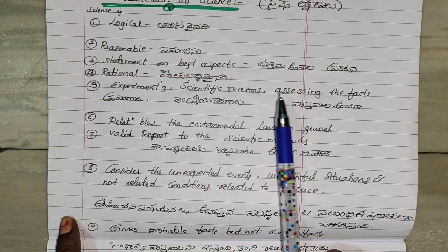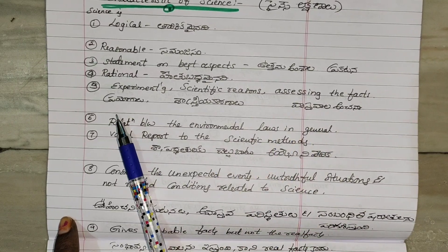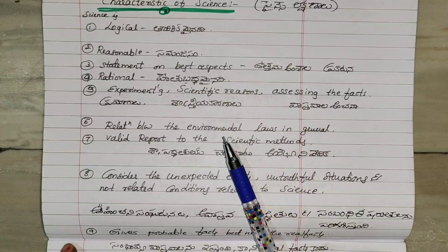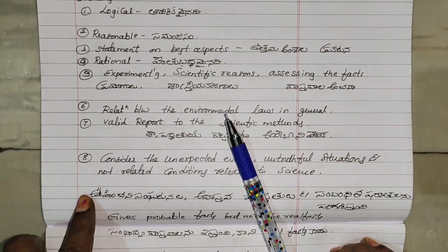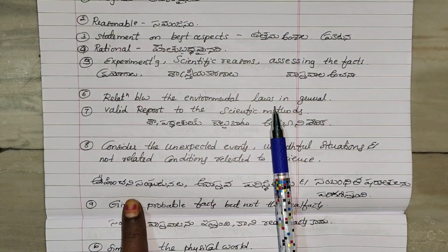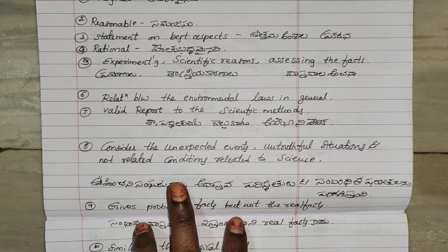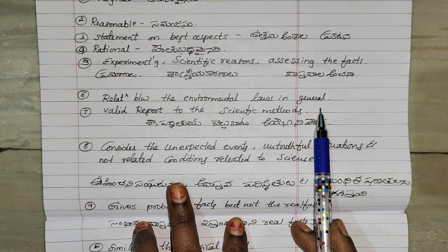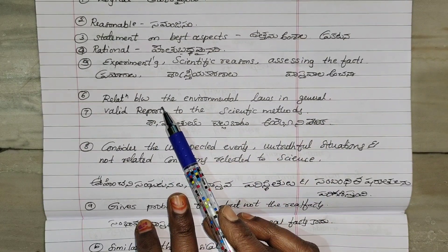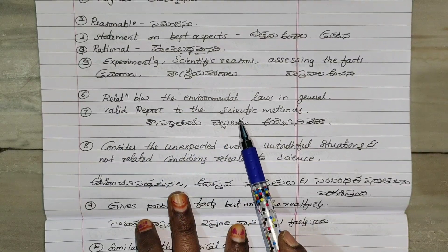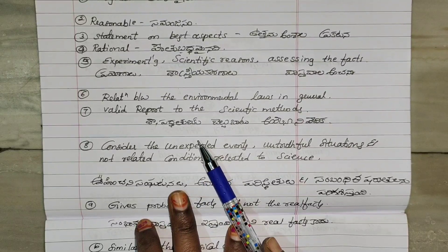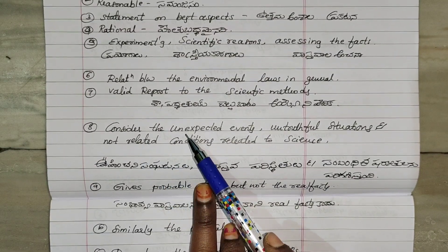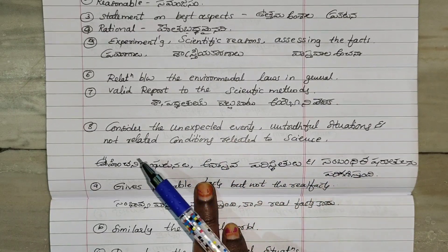Experimenting is scientific and is used for proof. Next, science considers unexpected events, untruthful situations, and not related conditions.